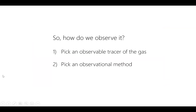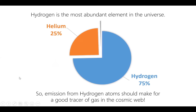To understand how the Milky Way formed, we'd need to observe this process in real life — but it's extremely difficult. There are always two steps in observing a physical phenomenon: first, pick an observable tracer of the gas; second, pick the best observational method. Hydrogen is the most abundant element because of Big Bang nucleosynthesis — the first atoms formed before any stars or galaxies. Three-quarters of all baryonic atoms in the universe are hydrogen atoms.